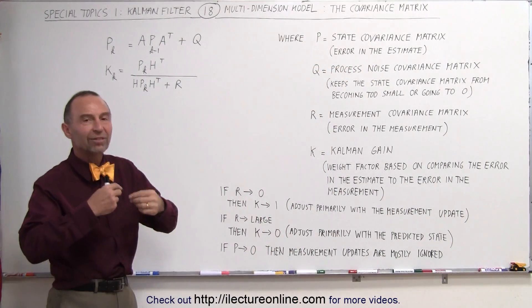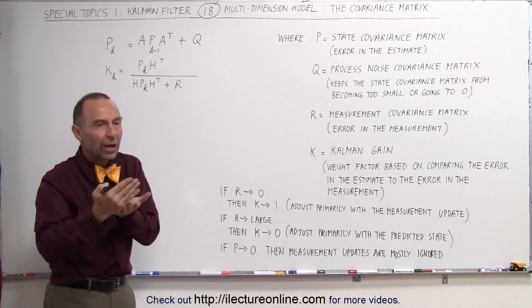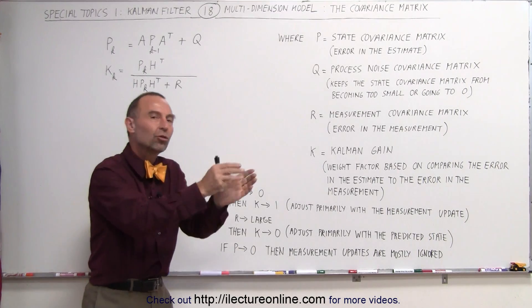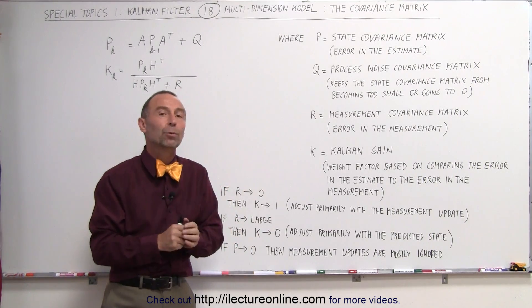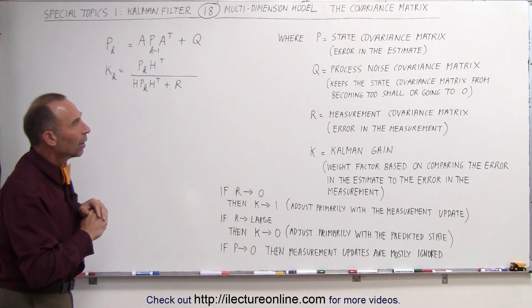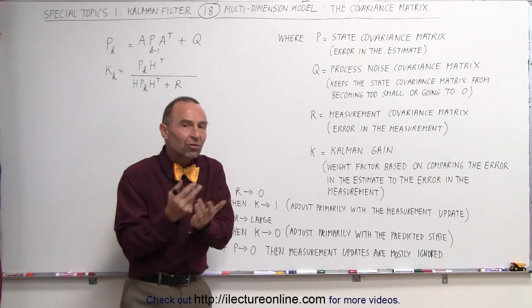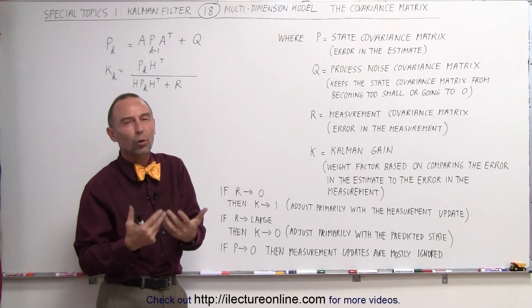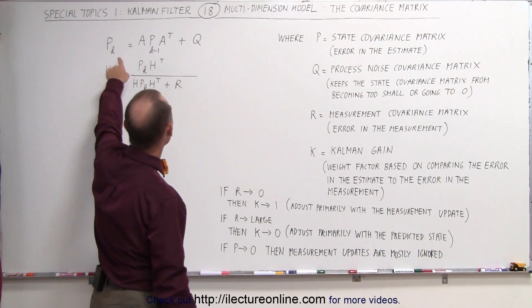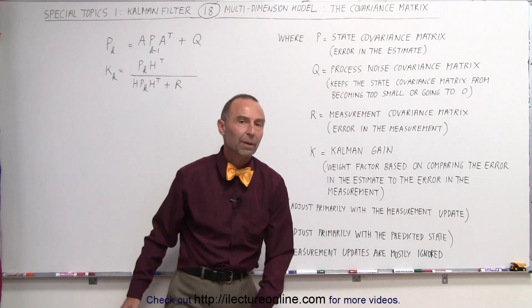With the state matrices, we're always estimating what the next state will be based upon some theoretical equations and parameters, so we can make a prediction of what the next state will be — the state of velocity, position, acceleration, things like that. We also have to realize that the estimation process could have some errors, some noise, some uncertainties. So we have to add to the state covariance matrix what we call a process noise covariance matrix.